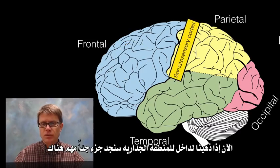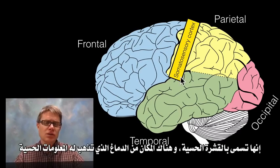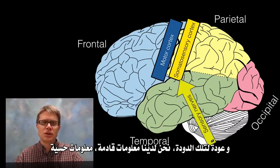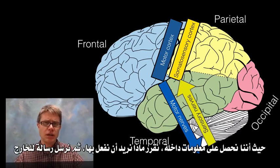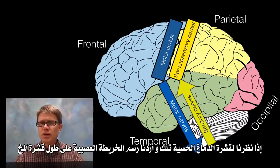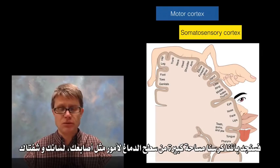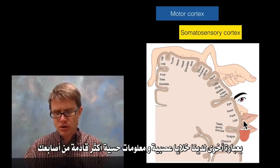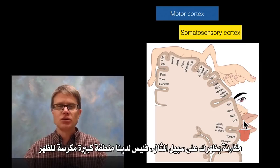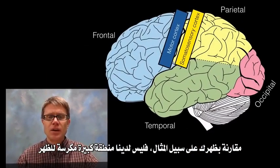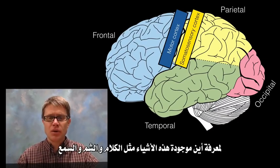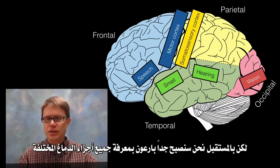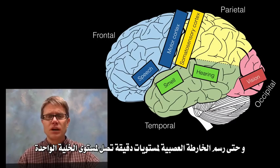Inside the parietal zone is the somatosensory cortex, where sensory information comes into the brain. On the other side of the lobe is the motor cortex, sending motor output out — a point of integration where we receive information, decide what to do, and send the message back out. If we map the somatosensory cortex along the cerebral cortex, we find that huge amounts of brain surface area are dedicated to the fingers, tongue, and lips — far more neurons handle sensory input from fingers than from the back. Future research using functional MRIs will map all brain nuclei down to the level of the individual neuron.